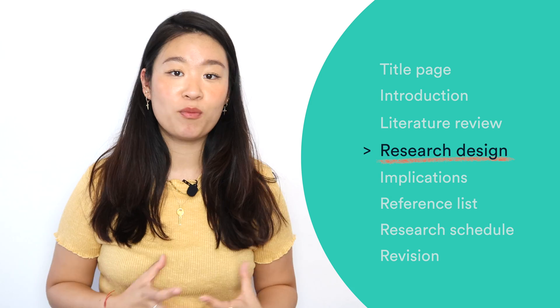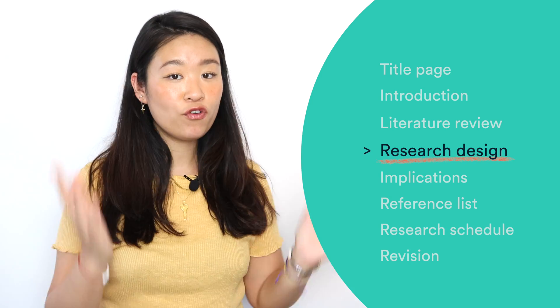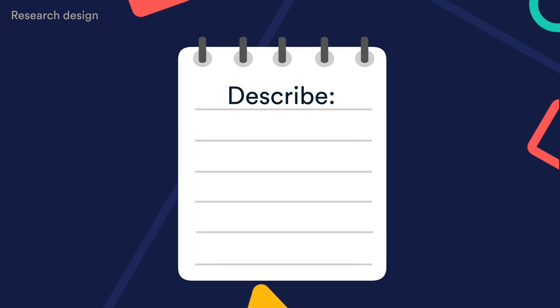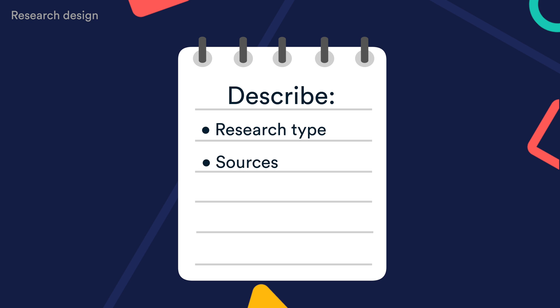The research design or methodology should describe the overall approach and practical steps you will take to answer your research questions. Things to describe include: research type — is it qualitative or quantitative, primary or secondary? Sources — who or what will you actually study? Research methods — what tools and procedures will you use? And practicalities — any foreseeable obstacles in terms of timescale or resources required?